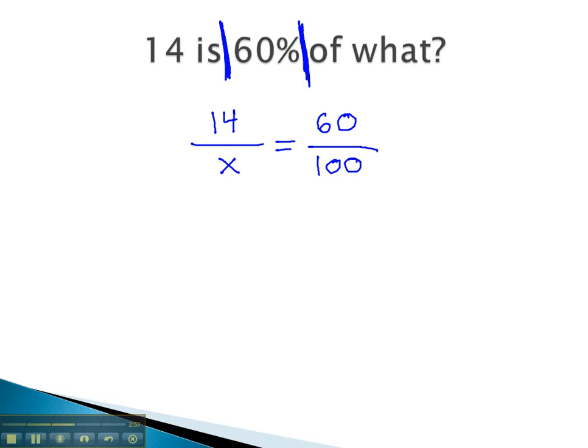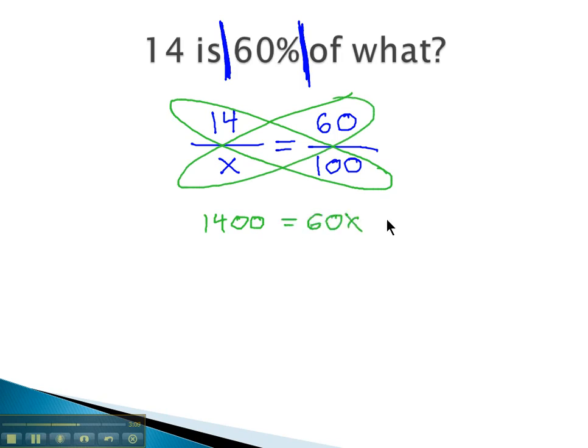Now, we simply have to solve the remaining proportion in order to answer the question. We solve proportions by multiplying the diagonal to give us 1400 equals 60x. And finally, to get the x alone,